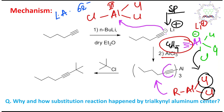I call it trialkynyl aluminium because the alkynyl group — the terminal alkyne — is directly attached to aluminium, giving an sp carbon–aluminium bond. Now, aluminium has relatively more covalent character compared to lithium, since lithium is a Group 1 element and aluminium is a Group 13 element, making the carbon–aluminium bond relatively less polar. In this context, the trialkynyl aluminium reacts with tert-butyl chloride to produce a carbon–carbon bond.